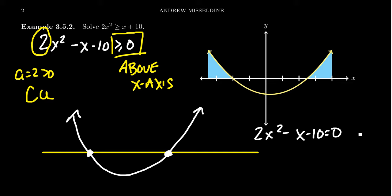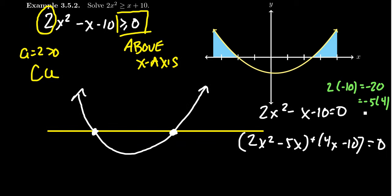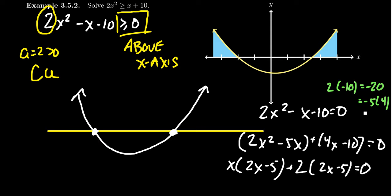You could solve this by the quadratic formula, completing the square, or factoring. Notice that 2 times negative 10 equals negative 20, and I need factors of negative 20 that add to be negative 1 — you could do negative 5 and 4. With these numbers in hand, we can factor by groups. You get 2x squared minus 5x as your first group, and 4x minus 10 as your second group, all equal to 0. From the first group you pull out x, leaving 2x minus 5. From the second group you pull out 2, leaving 2x minus 5. Those match up, so the factorization is (2x minus 5)(x plus 2) equals 0.